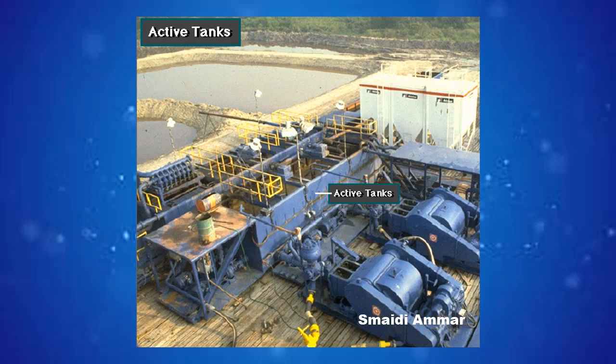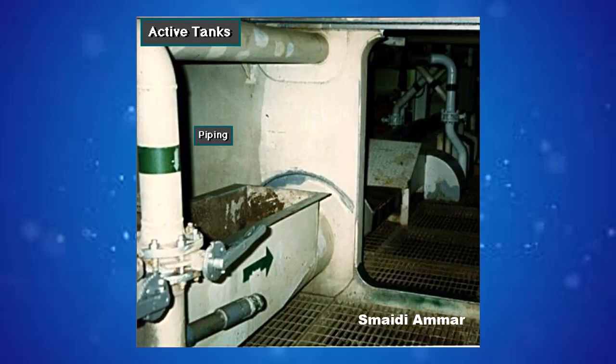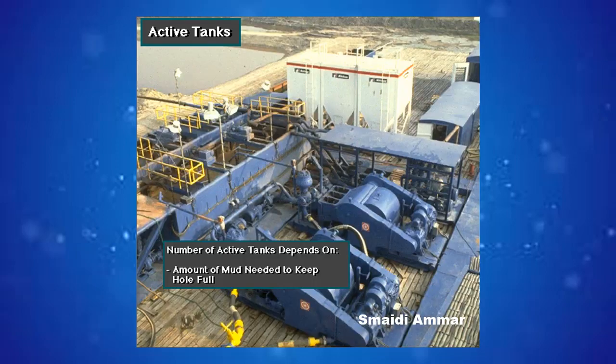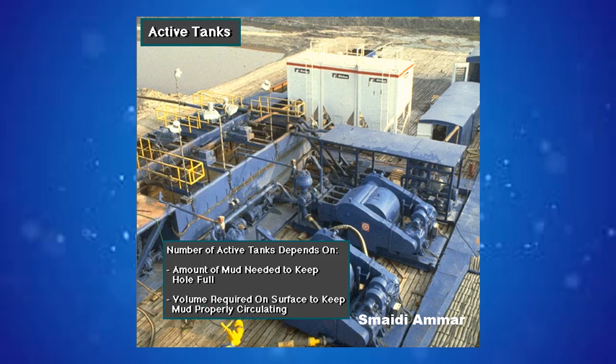The pump takes the mud out of the active mud tanks and circulates it through the system. Crew members connect the mud tanks with piping and manifolds. The number of active mud tanks depends on the amount of mud needed to keep the hole full, and the volume required on the surface to keep the mud in good condition for circulating.